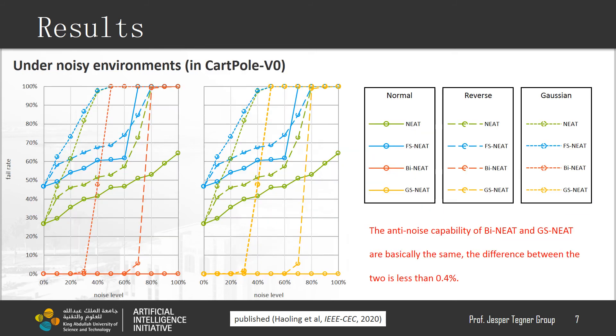In the noise evaluation, we set three types of noise. Failure rate here represents the possibility that the algorithm cannot complete a task. These two figures show that Bi-NEAT and GS-NEAT have better anti-noise performance than others.